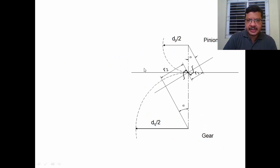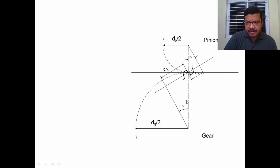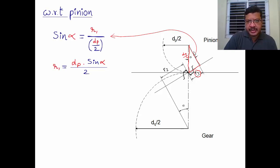To find 1/R1 + 1/R2, we use the geometry of the two teeth as shown here. The radius of curvature is found at the pitch point for convenience. Here dp is the diameter of the pinion and dg is the diameter of the gear. This is the pitch circle. The common normal makes a pressure angle α with this line. From the right triangle geometry, sin α = R1 / (dp/2), giving R1 = dp·sin α / 2.